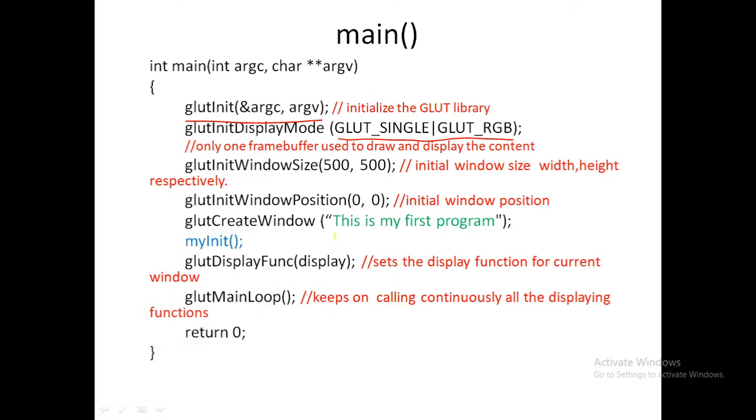Next is myInit, a user-defined function for initialization. Then glutDisplayFunc(display), where display is a user-defined function. Whatever you want to draw—lines, points, cubes—that coding is written inside display. Finally, glutMainLoop keeps main under a loop, continuously calling all the display functions until you close the output window.